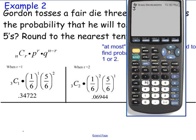That's going to be 3C1, which is 3, times 1 to the sixth, raised to the 1, times 5 over 6, squared. And we get .34722.